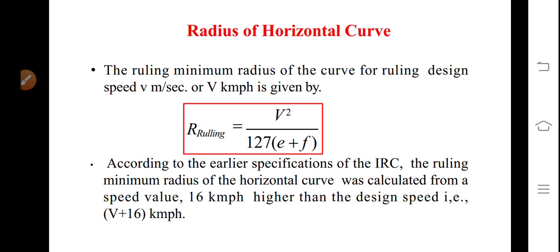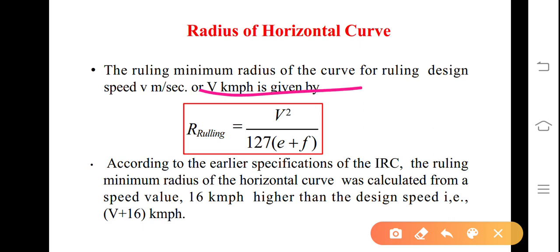Next, for the radius of the horizontal curve: the ruling minimum radius for ruling design speed v (in km/h) is given by r_ruling = v² / (127 × (e + f)). Rearranging, e + f = v² / (127 × R). Put the suffix 'ruling' on R accordingly.